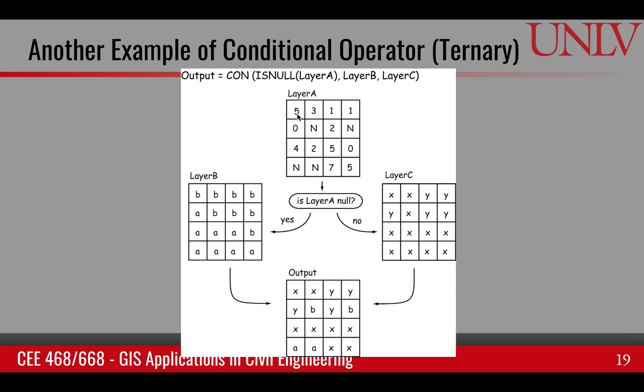Suppose 5. 5 is not null. So that will result in 0, which is false. So we'll pick layer C, x. But if we go to this value here, isNull will result in true, which means we will pick a value from layer B. And so a B will be chosen in the output. I hope this example further clarifies the conditional operator.